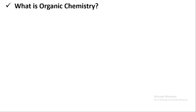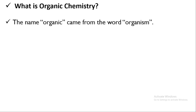Organic chemistry is exactly organic. There is a word called 'organism,' which means living plants, animals, and living things. The word 'organic' has its origin from 'organism,' meaning living things. This is the historical background of organic chemistry.